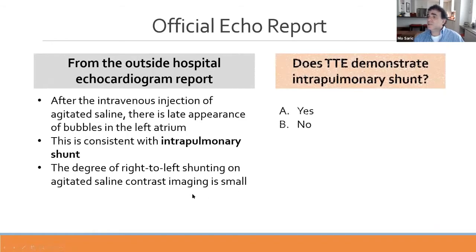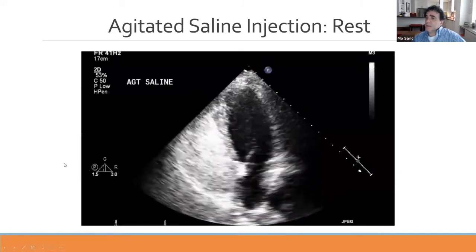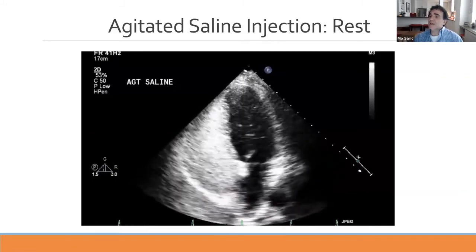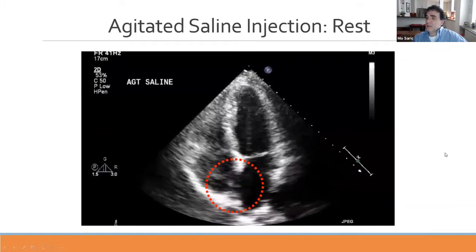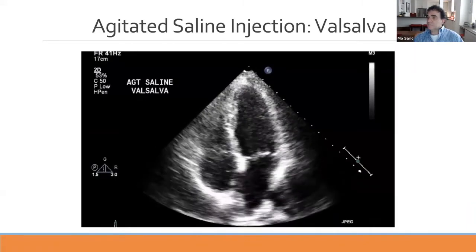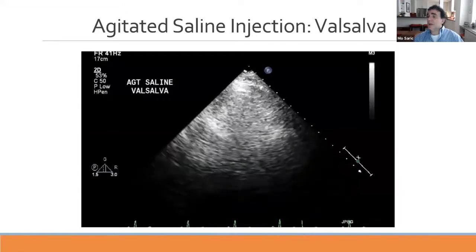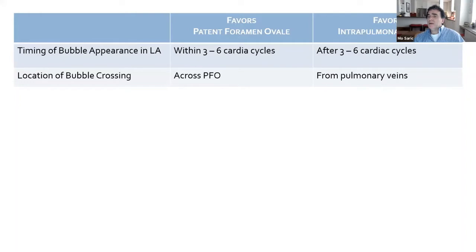Looking more carefully, bubbles appear around four to five beats after injection, but when they do appear, they appear in a bolus-like, intermittent fashion. There is no progressive increase in bubble amount with subsequent cardiac cycles. Furthermore, we can actually see the bubbles crossing at the level of the patent foramen ovale. The same is observed with Valsalva maneuver—direct passage at the level of the interatrial septum. Timing alone is not sufficient; we must determine whether crossing occurs across the PFO or from the pulmonary vein.